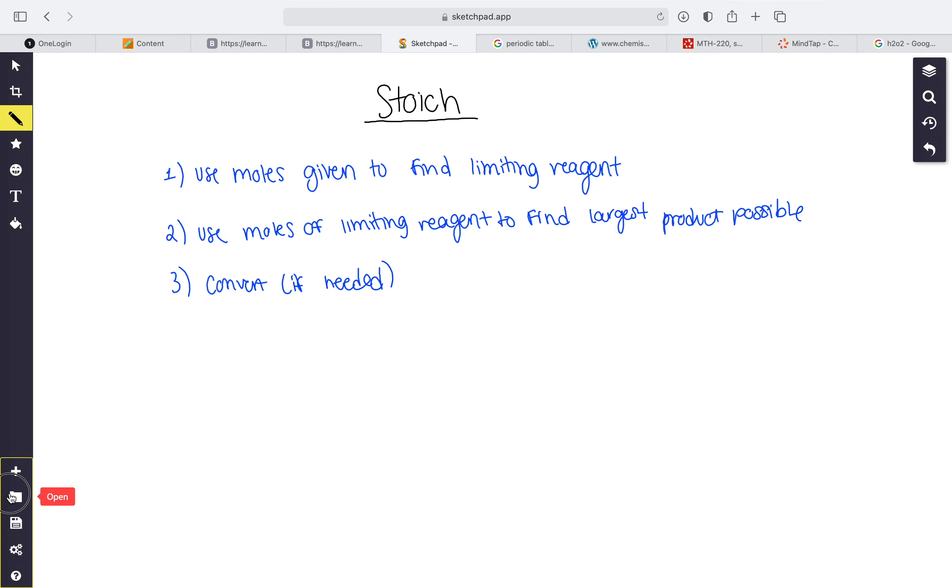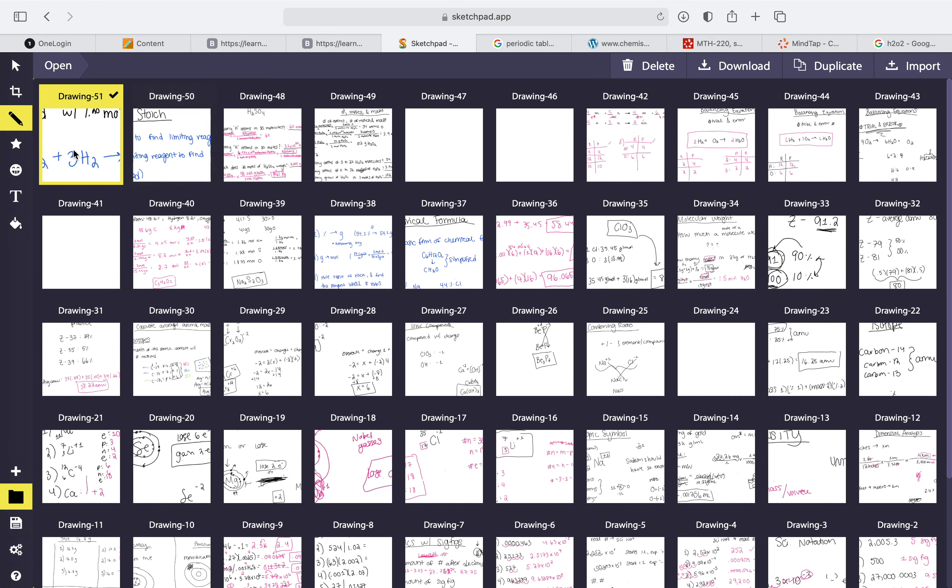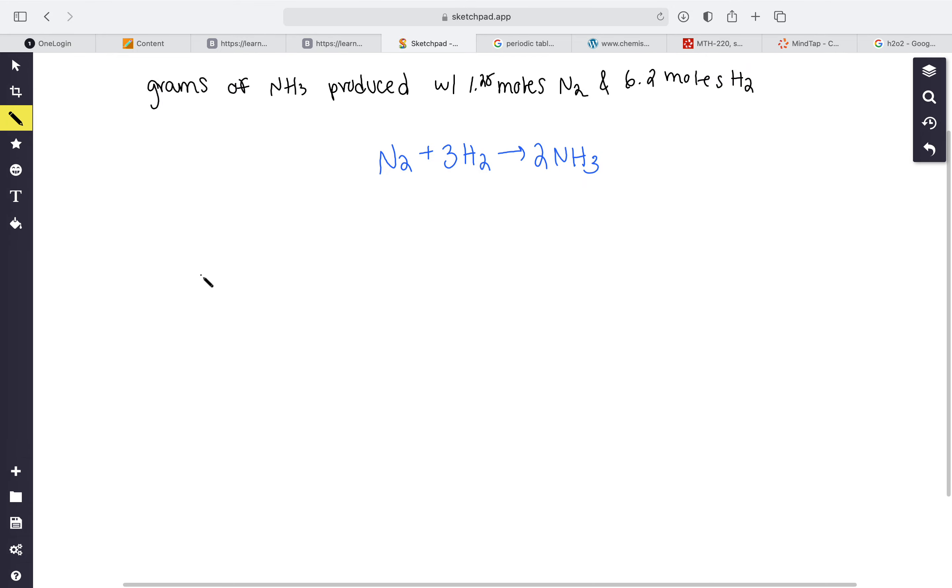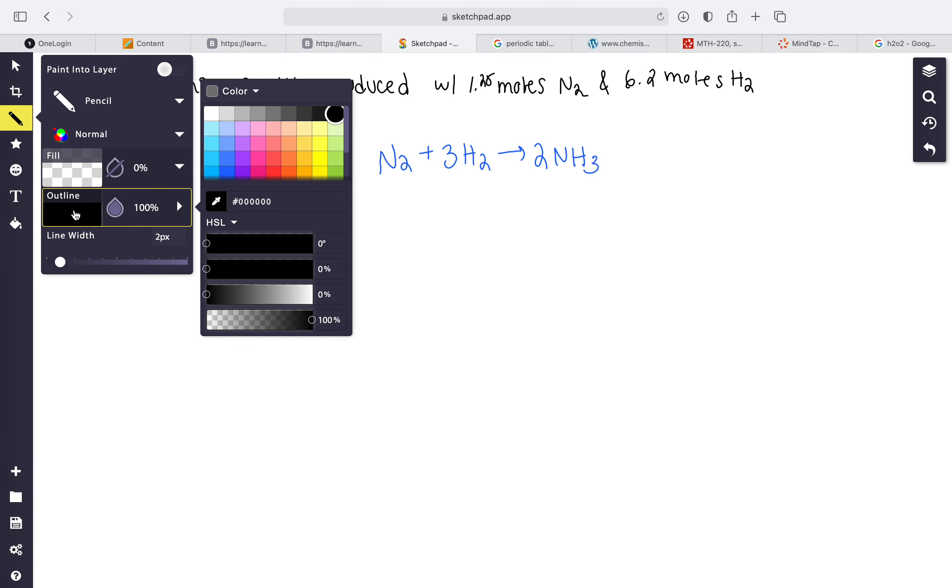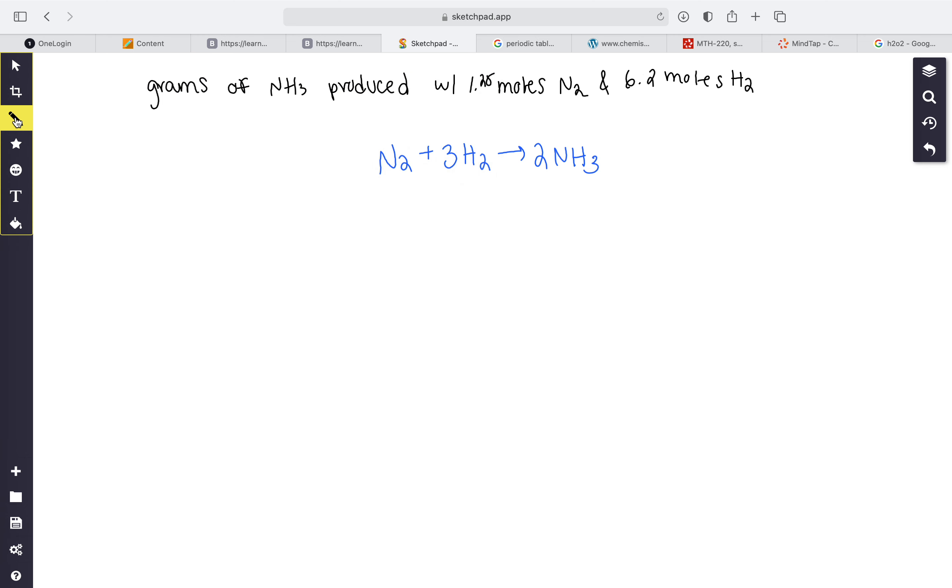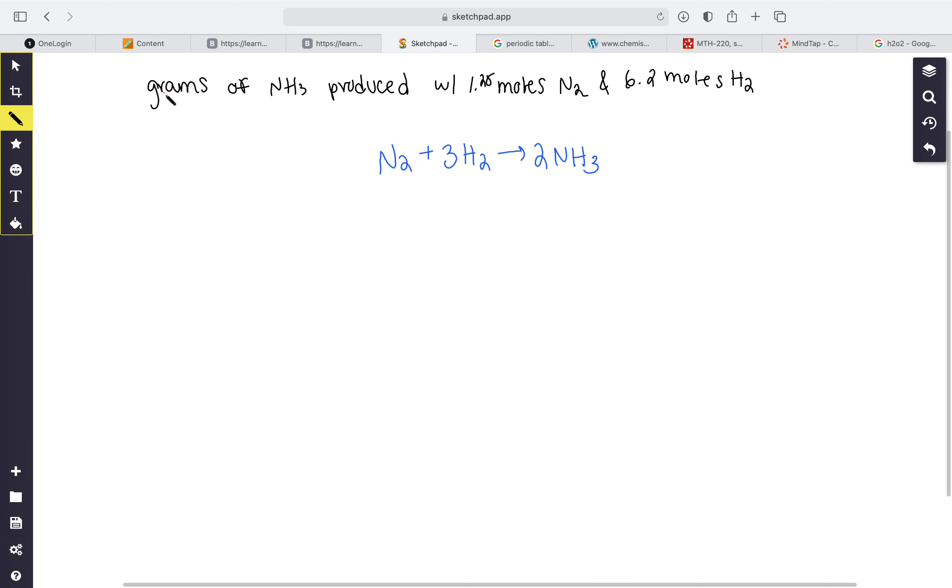I'm going to do a problem on that right now. Grams of NH3 produced with 1.25 moles of N2 and 6.2 moles of H2. We have N2 plus 3H2 yields 2NH3.